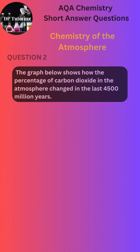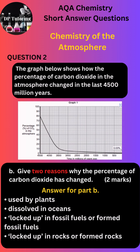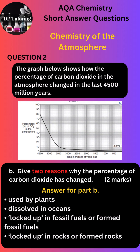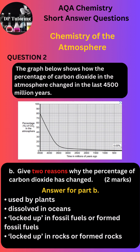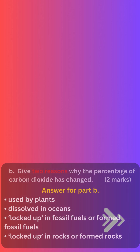Answer for part B. You need to give two reasons why the percentage of carbon dioxide decreased. Any from the list below is acceptable: used by plants; dissolved in oceans; locked up in fossil fuels or formed fossil fuels; locked up in rocks or formed rocks.